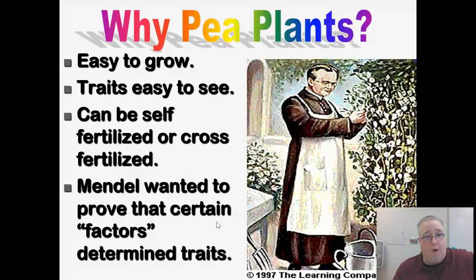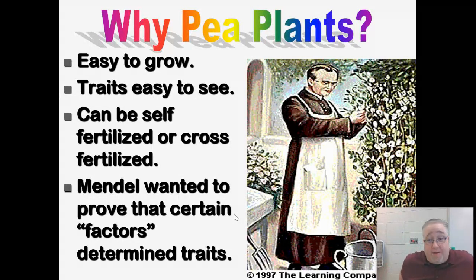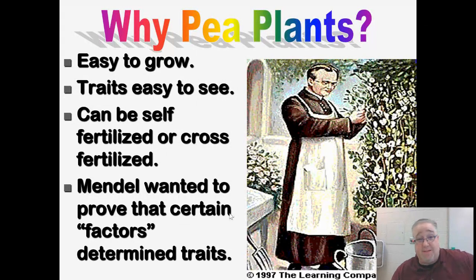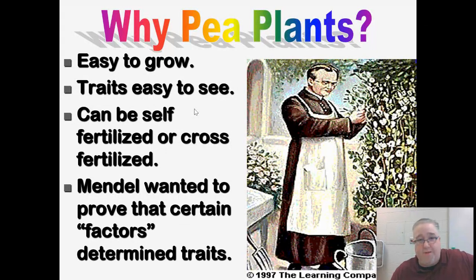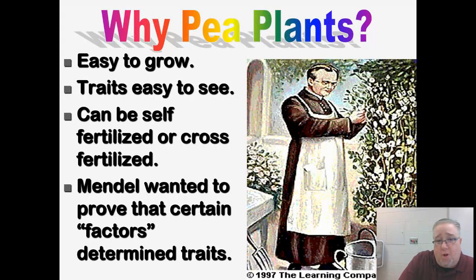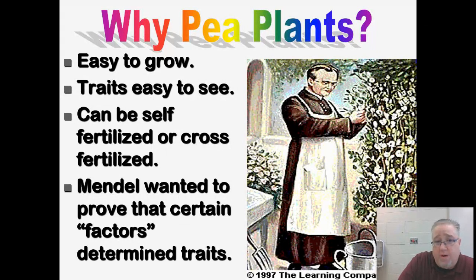Why was he using pea plants instead of humans, dogs, or monkeys? One of the big things about pea plants is that they're super easy to grow — you don't have to wait nine months for results like you would with humans. You put some seeds in soil, water them, and within a couple of weeks you've got plants to observe. The traits are really easy to see, and these plants can easily be bred with each other or with themselves through self-fertilization or cross-fertilization. What Mendel was trying to figure out was how traits were actually passed on from one generation to the next.